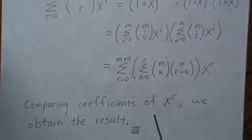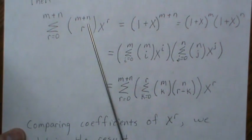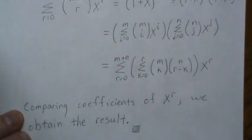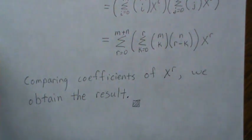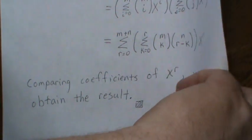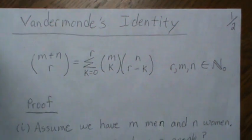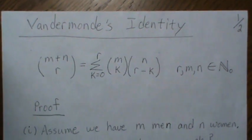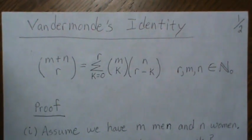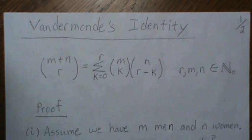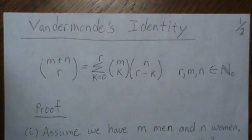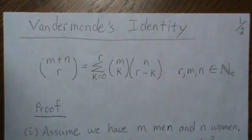So comparing coefficients, we obtain the result that this combination equals this sum. That's a second way to prove Vandermonde's inequality. We're going to use this in the next video on finding the mean and variance of the hypergeometric distribution. If you liked it, please like and subscribe. Thanks, bye.